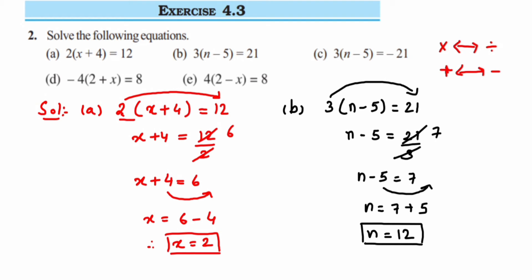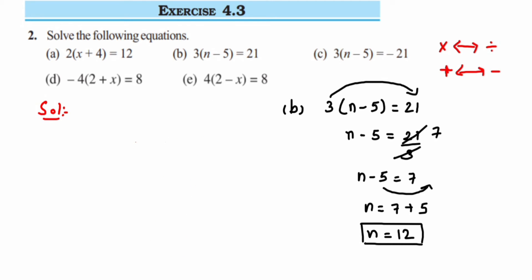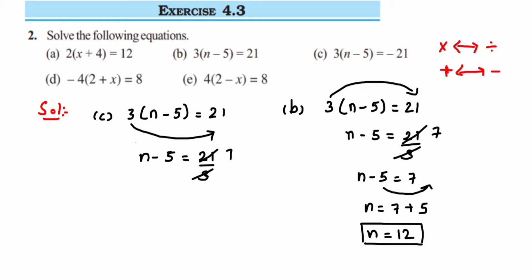Question number 3: 3 into n minus 5 is equal to minus 21. This is similar to the second question — the only difference is minus 21 instead of plus 21. Take 3 to the other side: n minus 5 is equal to minus 21 upon 3, which gives minus 7. Now take minus 5 to the other side — minus becomes plus — so n is equal to minus 7 plus 5, which is minus 2. Therefore n equals minus 2.